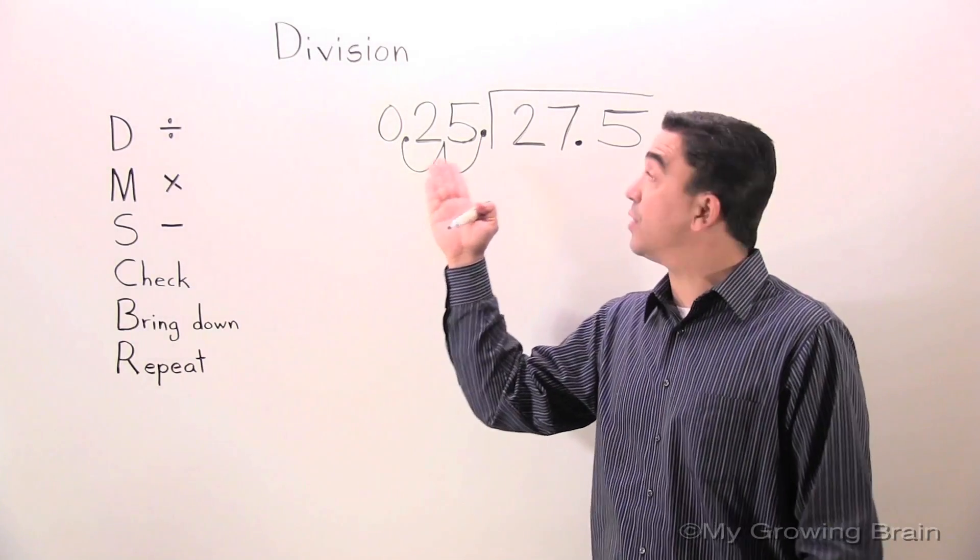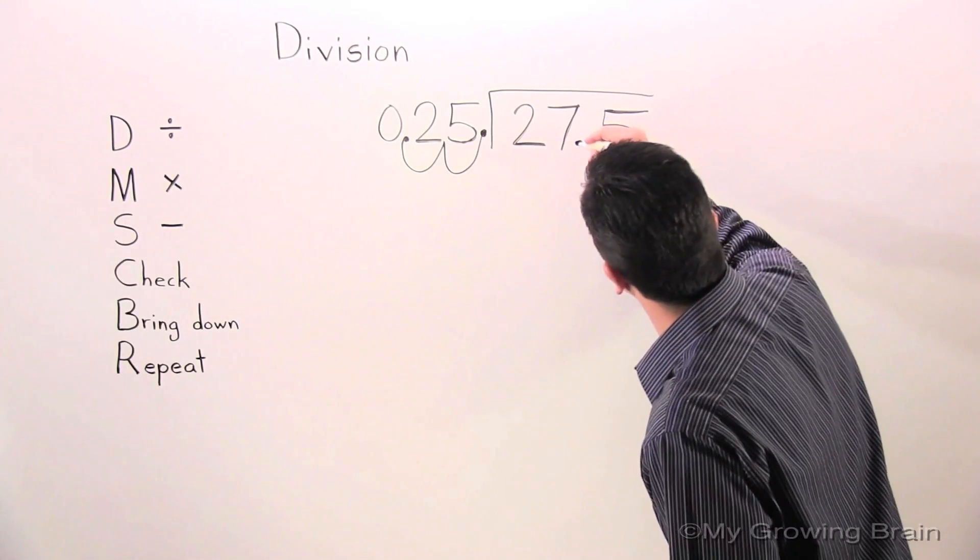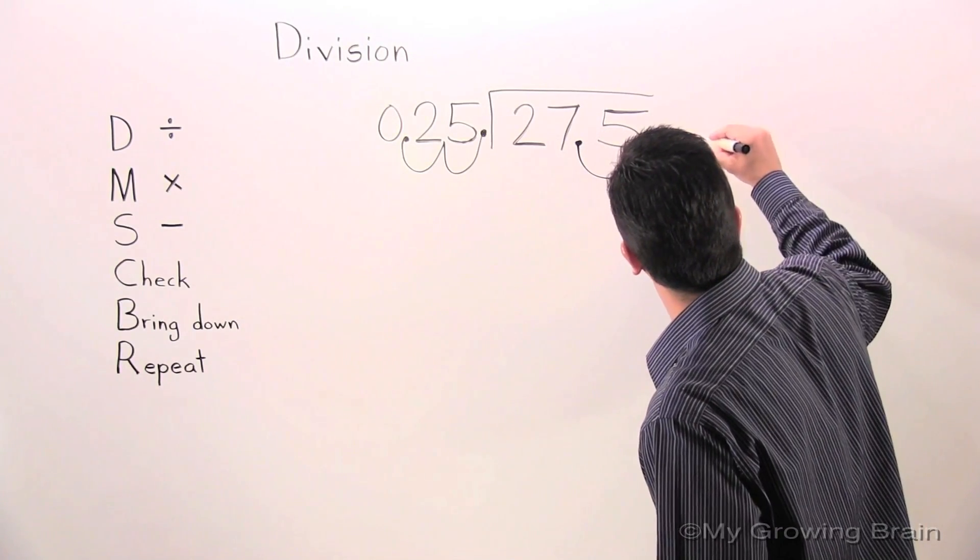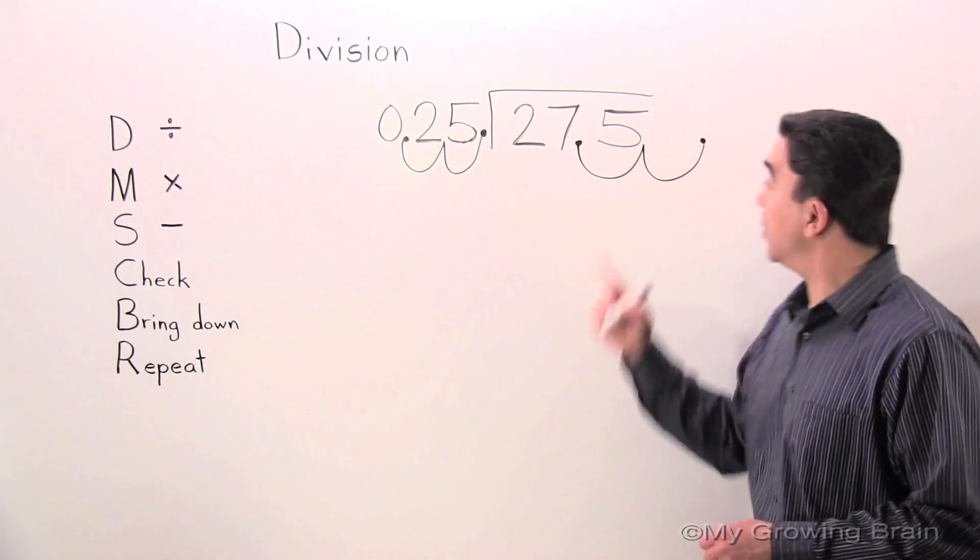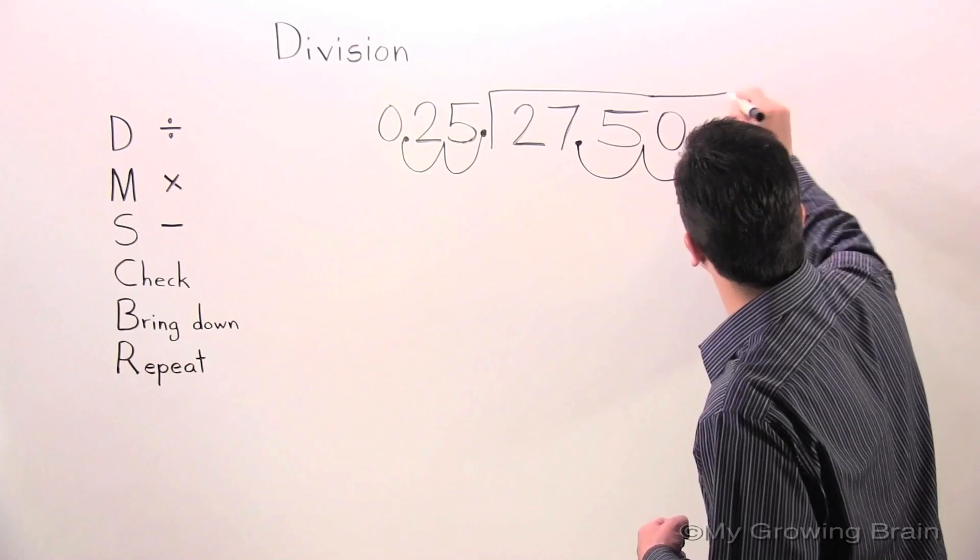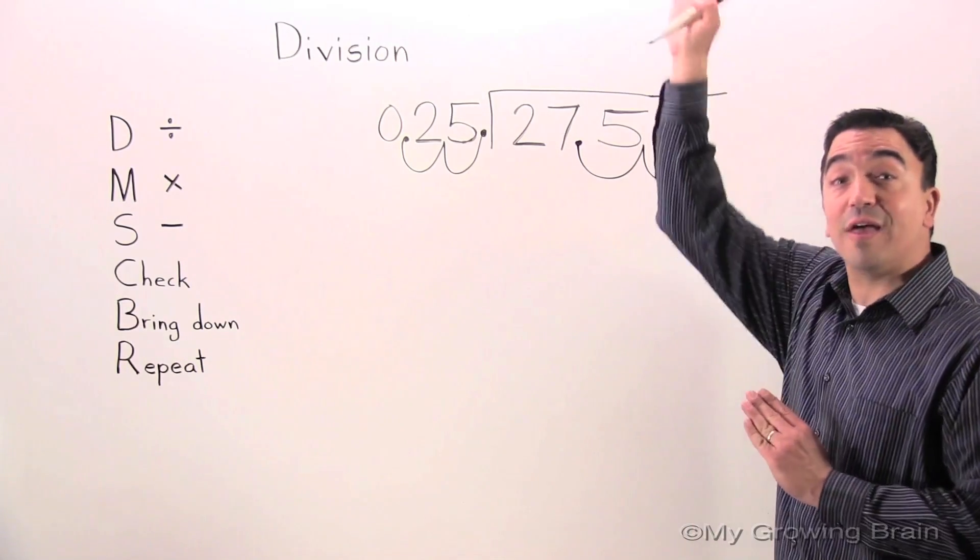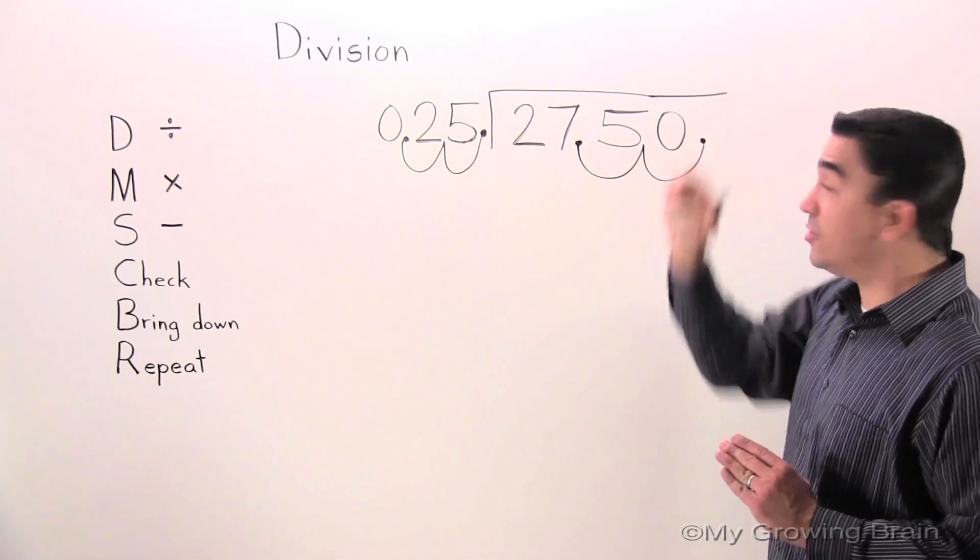Now, whatever I do to the divisor, I have to do to the dividend. Watch. Uh-oh. Nothing there. I'm going to add a zero. I will raise the decimal point into the quotient.